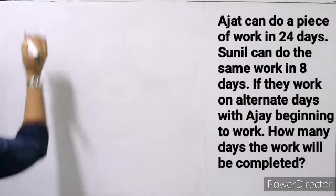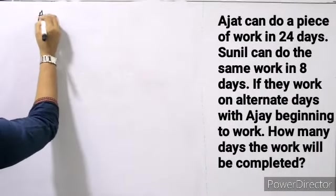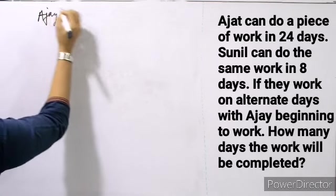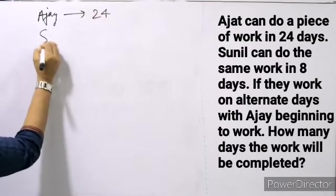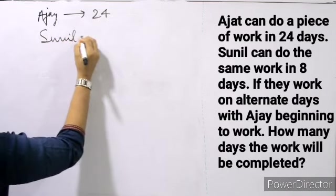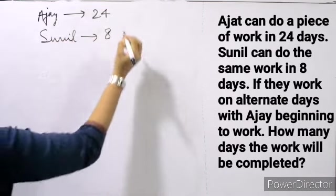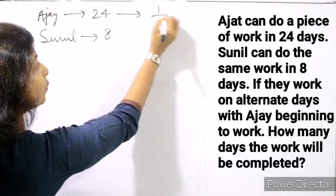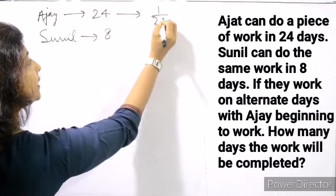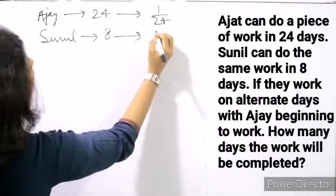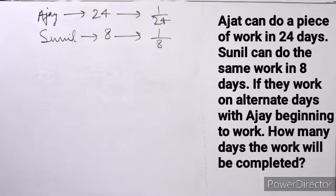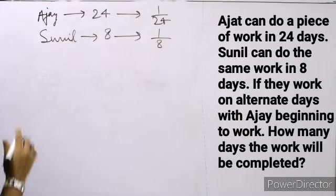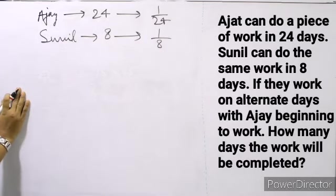Ajay can do a piece of work in 24 days and Sunil can do the same work in 8 days. So in 1 day, Ajay can do 1 by 24th of that work, and Sunil will do 1 by 8th of that work. If they work on alternate days, how many days will they take to finish the work?